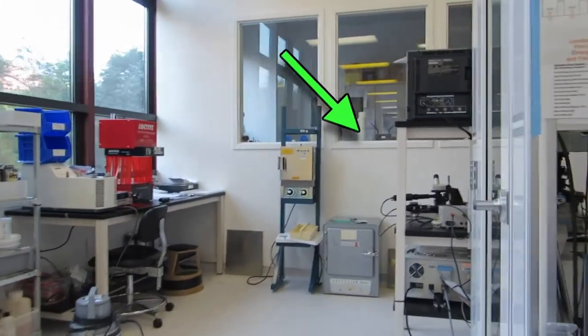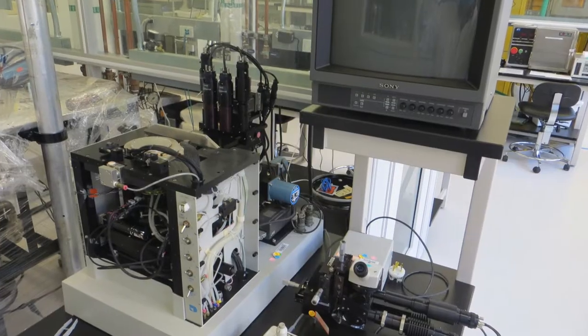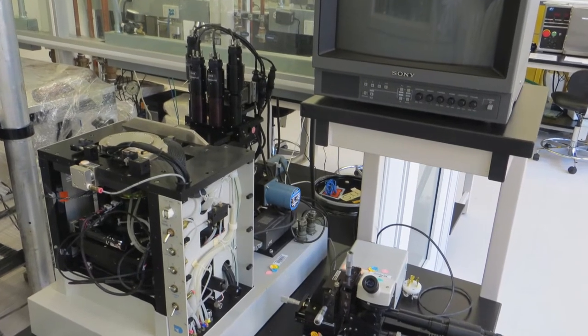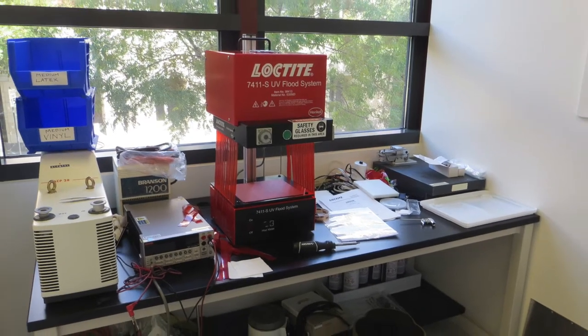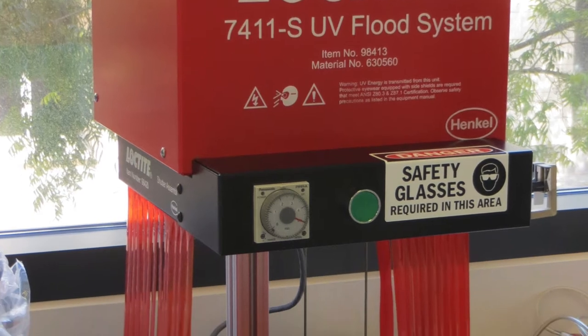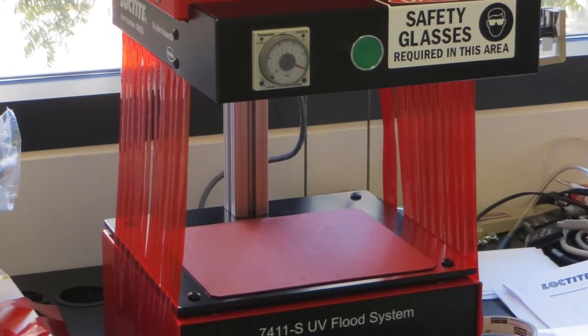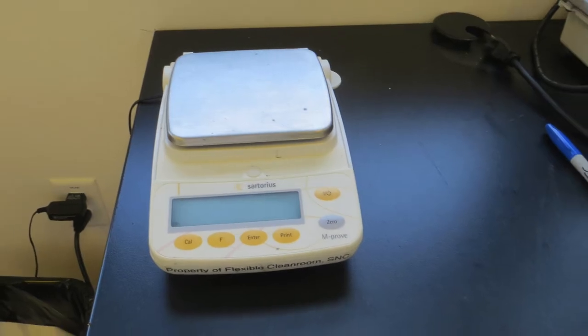Back in this corner of the lab is the flip chip bonder and also the Loctite UV exposure tool for doing blanket exposures and UV curing of optical adhesives. There's also a digital scale right here.